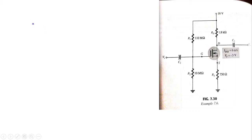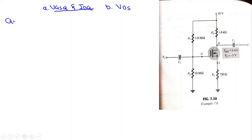In the previous lecture I gave a brief introduction about the DC analysis of depletion type MOSFET. Now we are going to do example 7.6 from the book. I need to find first the VGSQ and IDQ, and secondly the VDS. This is the Q point, and to find it we have two types of graphs: the device transfer characteristic curve and the network equation or load line curve.